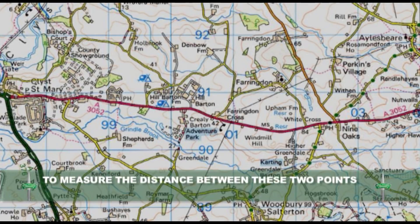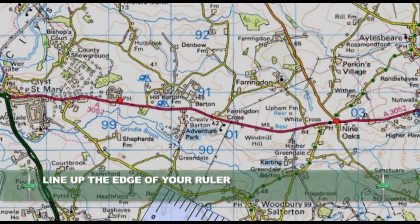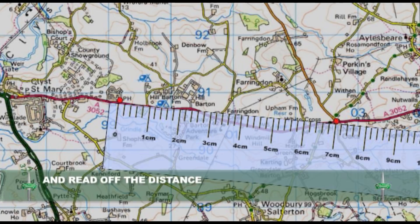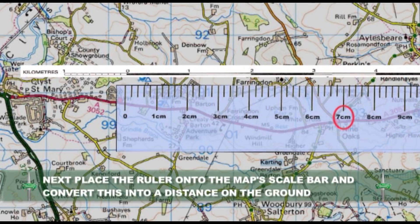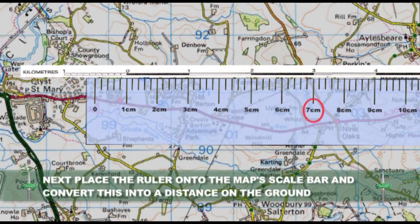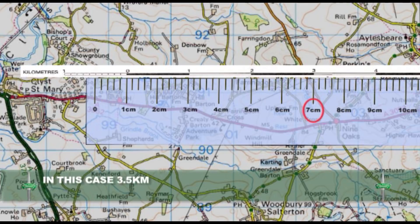For example, to measure the distance between these two points, line up the edge of your lightweight compass, protractor or ruler, and read off the distance. In this case, 7cm. Then place your ruler onto the map's scale and convert this into a distance on the ground. In this case, 3.5km.